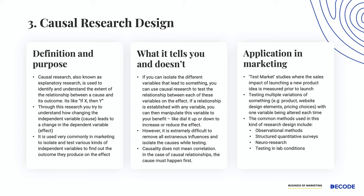One of the big uses of causal research is for test market studies, where the sales impact of launching a new product idea is measured prior to launch. Other uses include testing multiple variations of a product with one variable altered at different rates, testing various website designs with variations in one small element to isolate its impact on time spent, click-through rate, and conversion, and testing different price points to see which leads to maximum usage. Common methods include observational research, structured quantitative surveys, neural research, and testing in lab conditions.